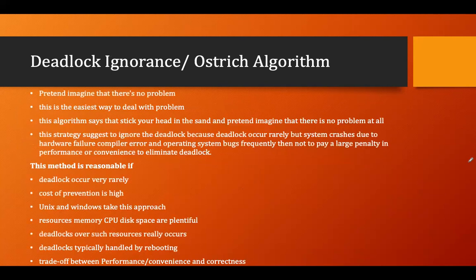As we have learned, there are three different types of deadlock handling methods: deadlock prevention, deadlock avoidance, and detection and recovery. Now let's go over the last one, which is called deadlock ignorance or the ostrich algorithm. There are operating system designs that assume the operating system will never come into deadlock — those operating systems follow the deadlock ignorance method, also called the ostrich algorithm.